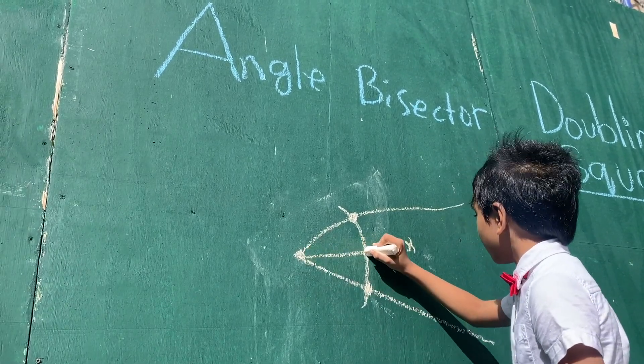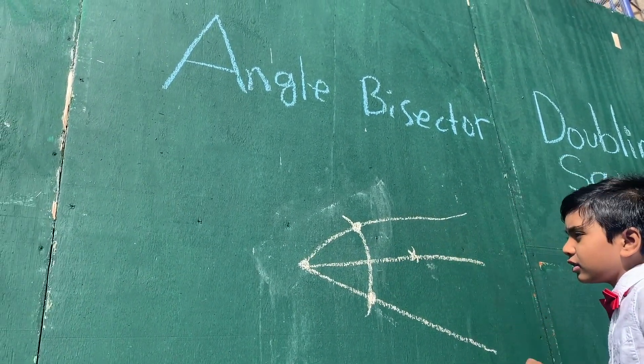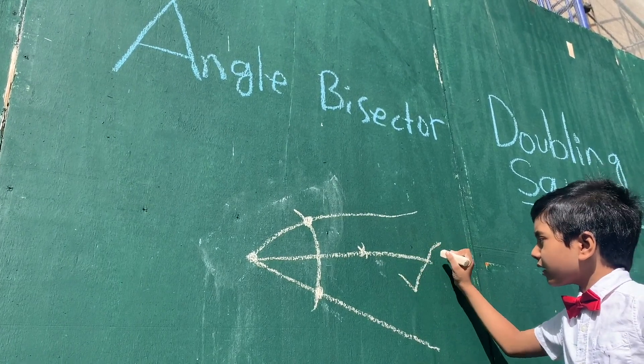Now draw a line through the two intersection points and ta-da! You've got the angle bisector.